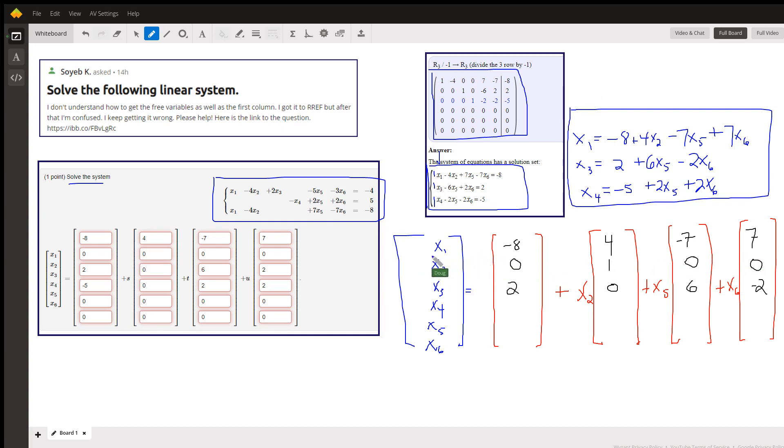x sub 1 is negative 8 times some value of x2. 4 times x2, so we put a 4 here, negative 7 for x5, 7 for x6. So this first row is how we fill in those vectors for x sub 1.